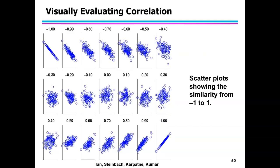Correlation, we already know, is from minus 1 to 1. If it is zero, it means there is no relationship between two variables. Scatter plots show the similarity from minus 1 to zero. You can see how it varies from minus 1 to plus 1. The direction is quite opposite.